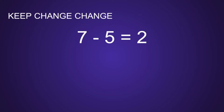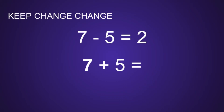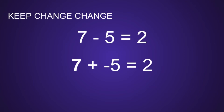We can use keep change change, or the additive inverse, to change a subtraction problem to an addition problem. You can see the problem on the screen: 7 minus 5, which most of us know instantly is equal to 2. I am going to show you how we can use keep change change to change that problem to an addition problem, but still get the same answer. So we start off with the original problem, 7 minus 5. We are going to keep the first number the same, change the subtraction sign to an addition sign, and then change that final number 5 to its opposite. The opposite of a positive 5 is a negative 5. And 7 plus negative 5 is still equal to 2.